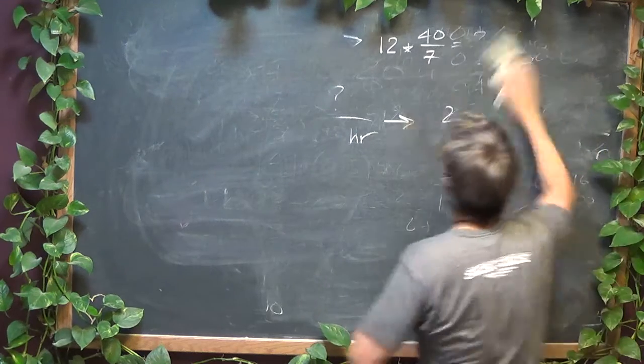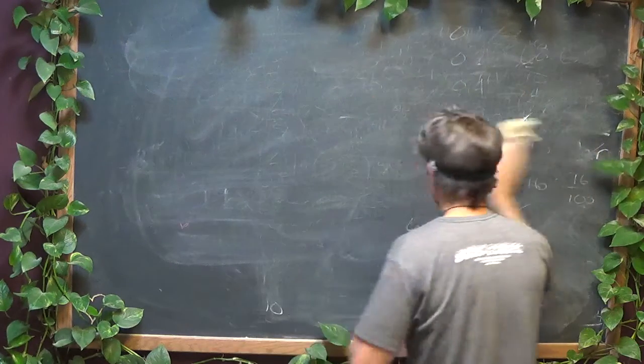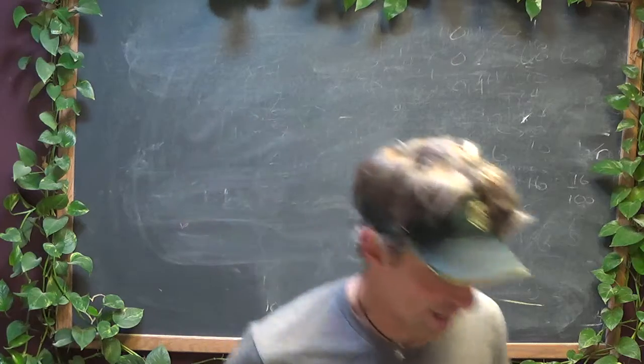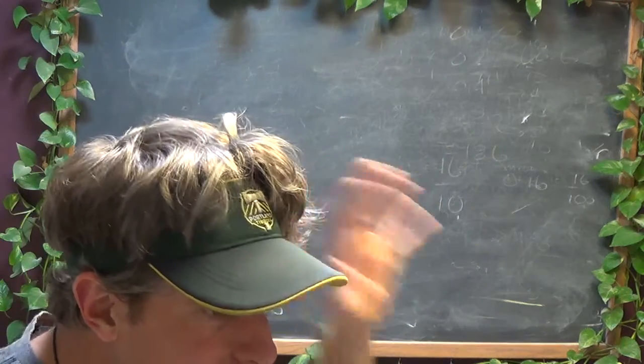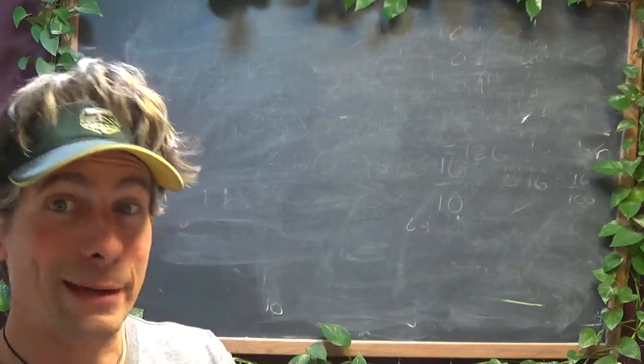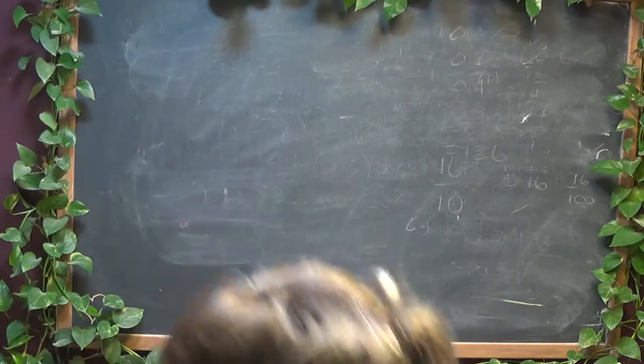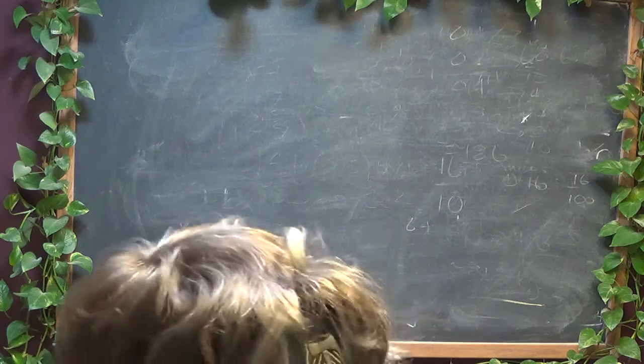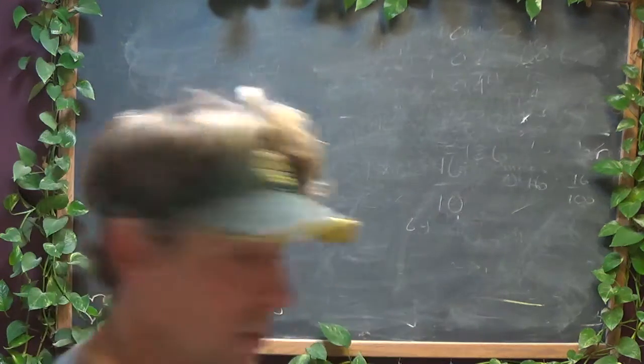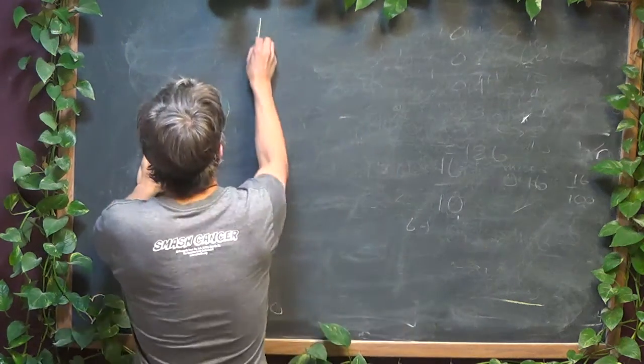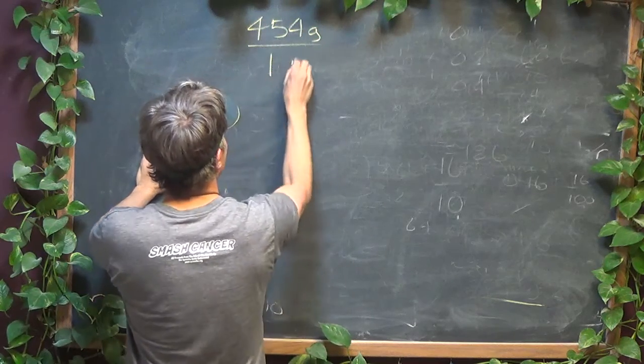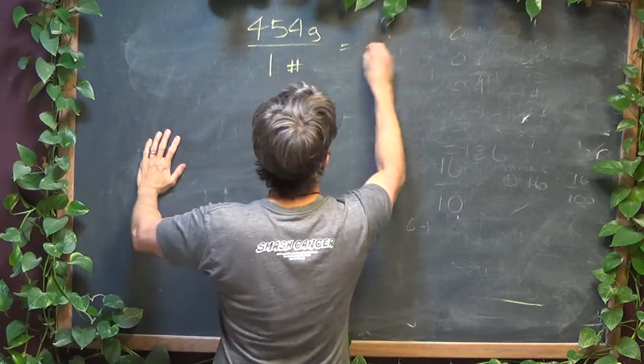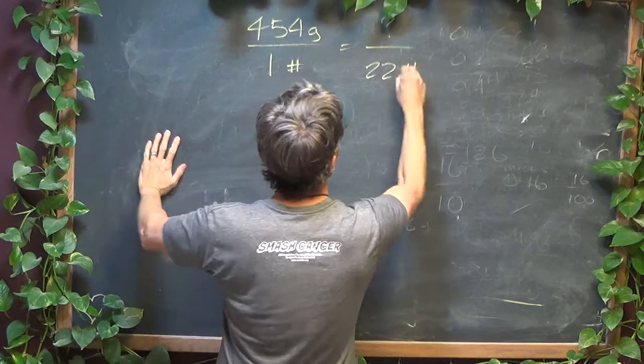So now these, the last two, you had to set up your own proportions to kind of go, and you all have pretty much no problem with these. But if there are 454 grams in a pound, I Googled that to check, I'm not European, I don't understand grams. 454 grams in one pound, how many grams in 22 pounds? So there are 454 grams in one pound. How many grams are there in 22 pounds?